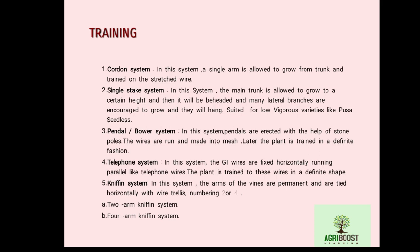In the single stake system, the main trunk is allowed to grow to a certain height, then beheaded, and many lateral branches are encouraged to grow downward. It is suitable for low-vigorous varieties like Pusa Seedless. The pendal, bower, arbor, or pergola system uses stone poles with wires run into a mesh, and the plant is trained in a definite fashion.